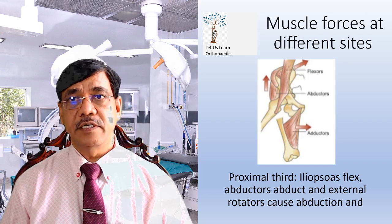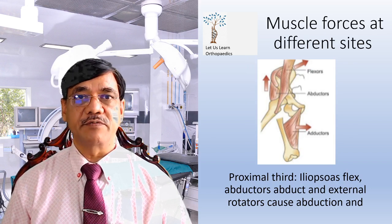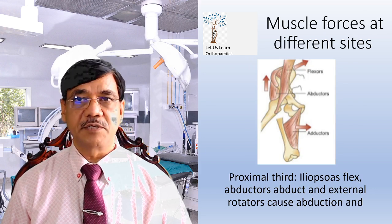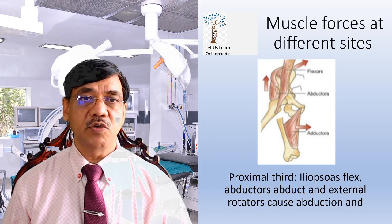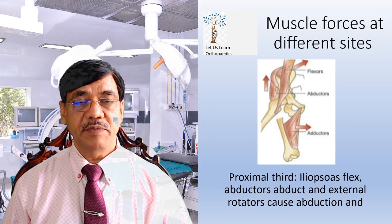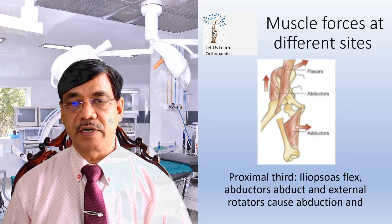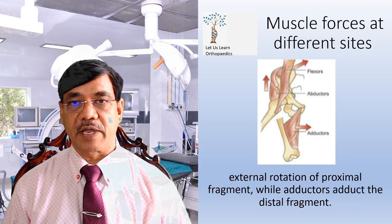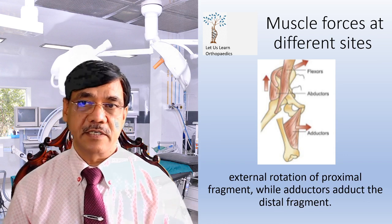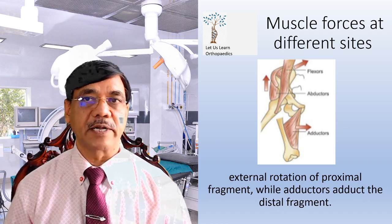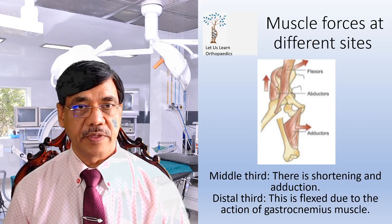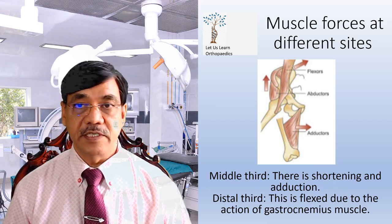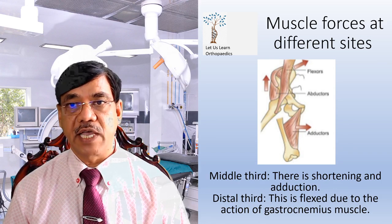The various muscle forces act at different sides. Look at this diagram to understand. In proximal shaft fractures, the iliopsoas flexes, the abductors abduct, and the external rotators cause abduction and external rotation of the proximal fragment, while the adductors adduct the distal fragment. In the middle third, there is shortening and adduction. Whereas in the distal third, the fragment is flexed due to the action of the gastrocnemius muscle.